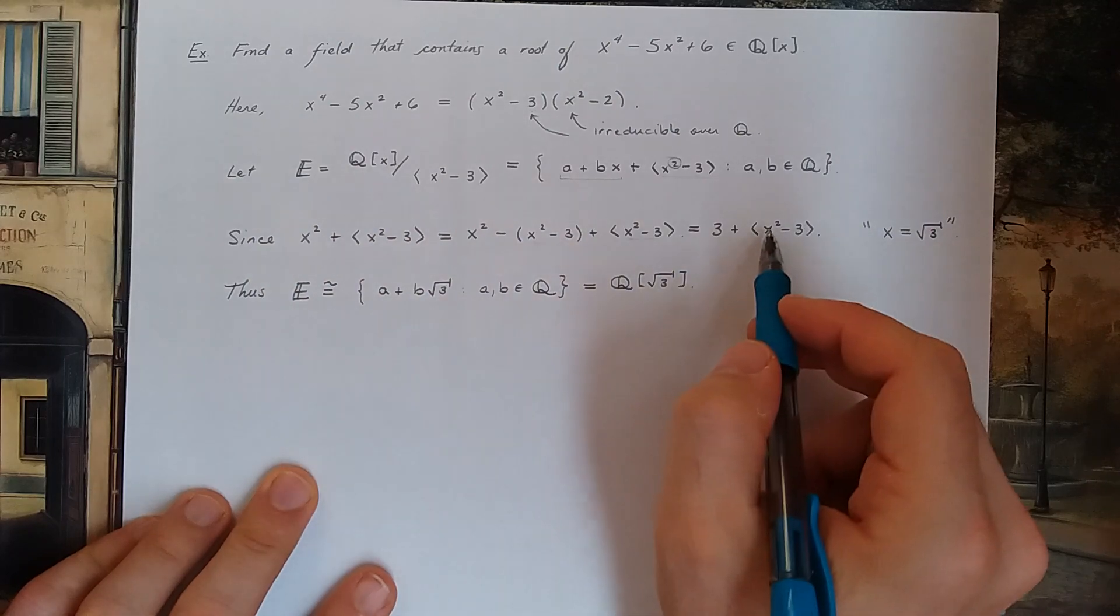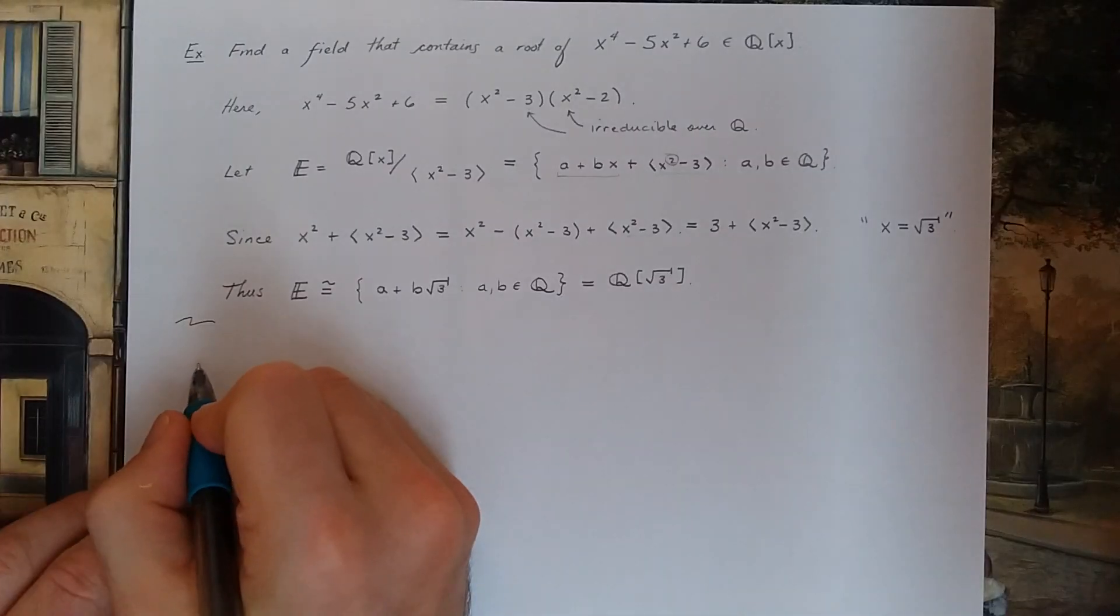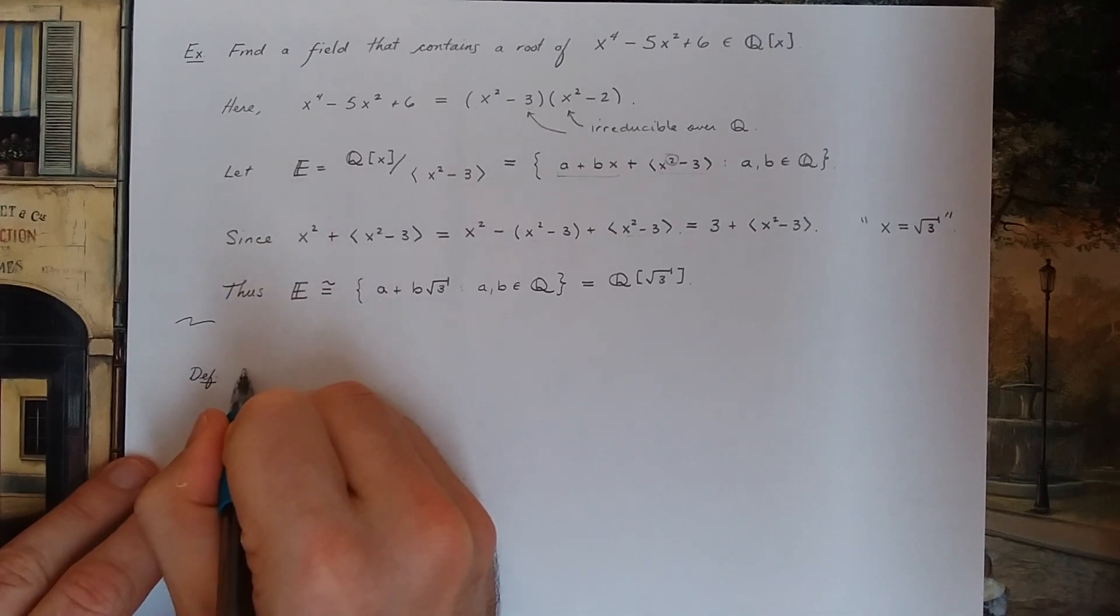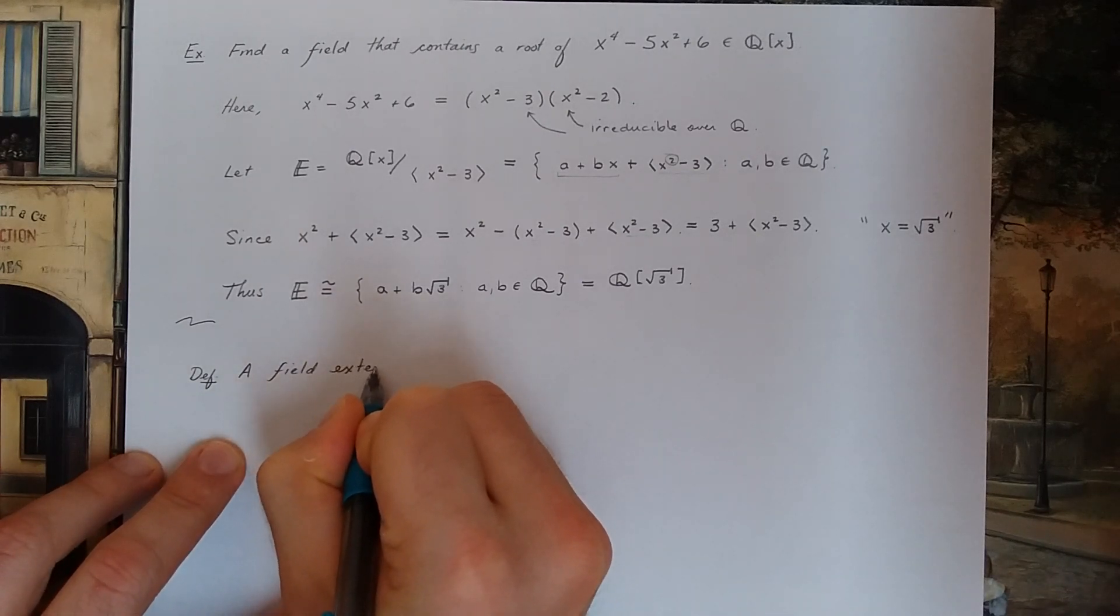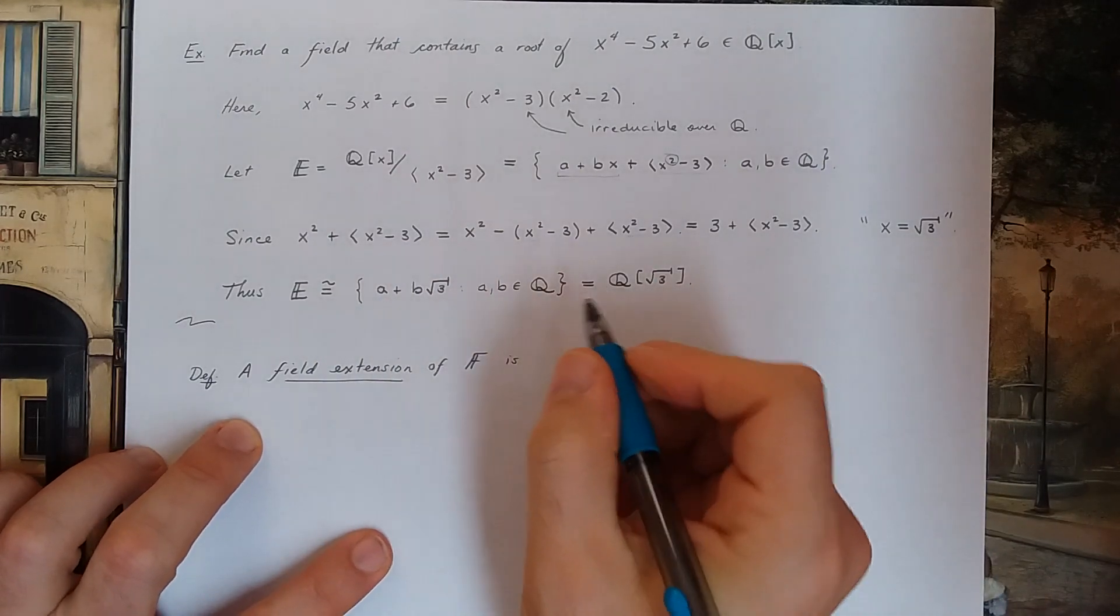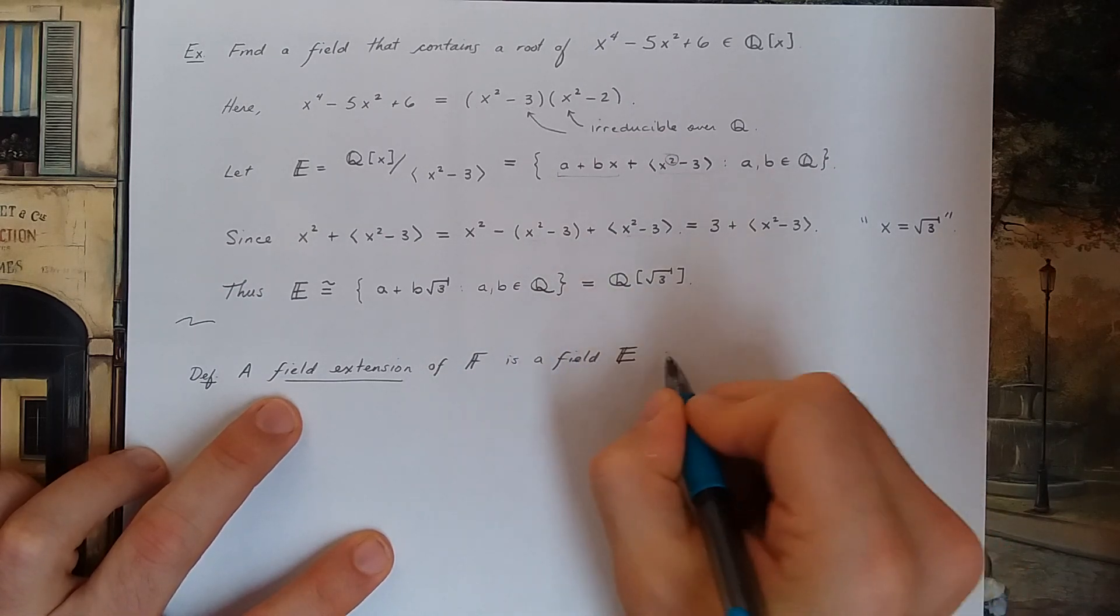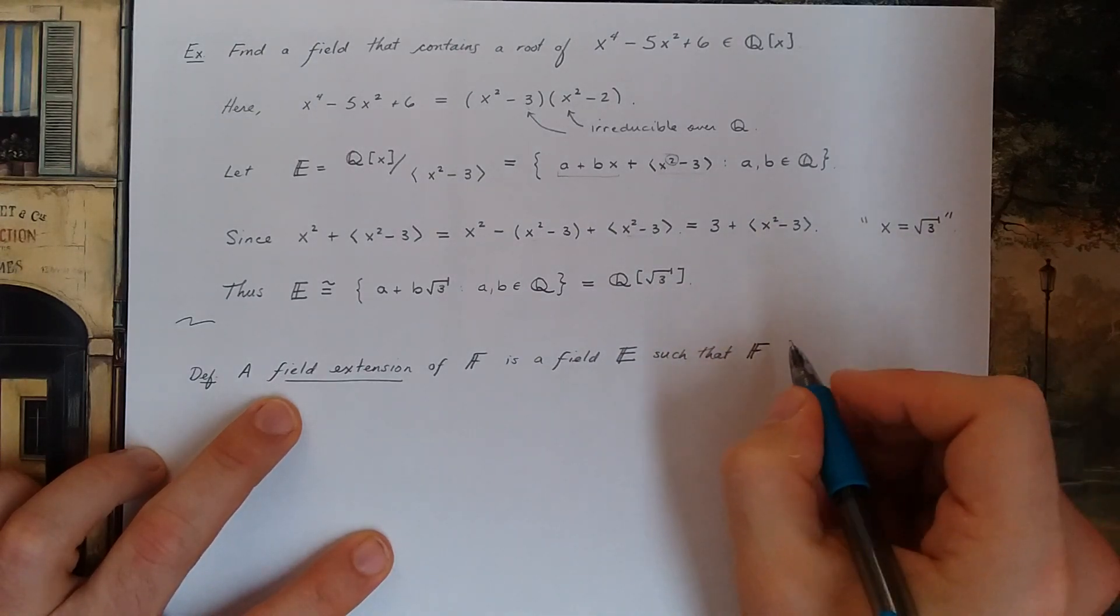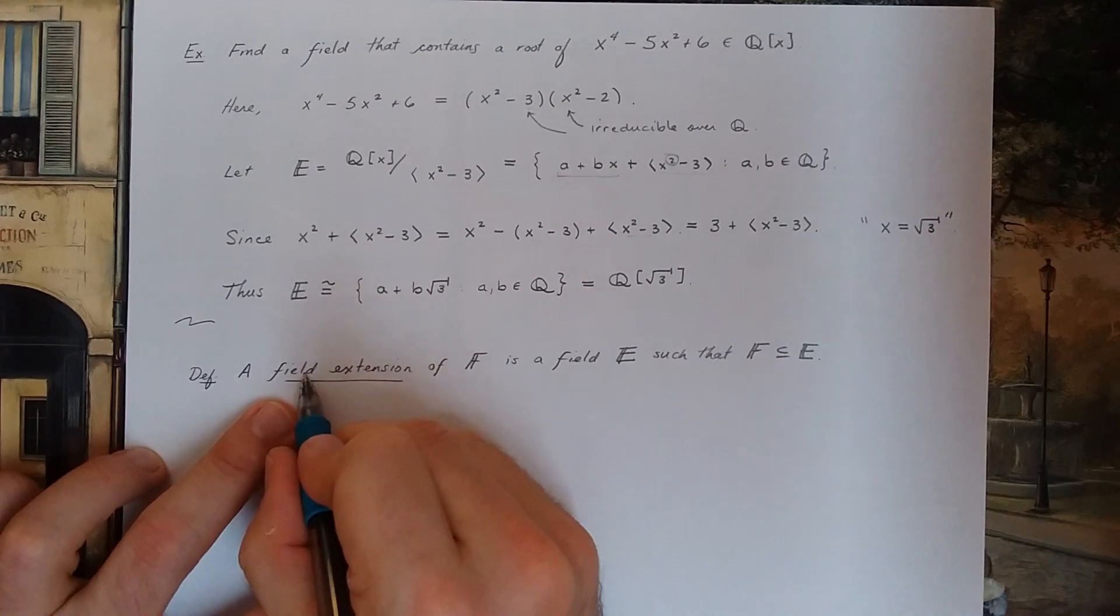So there's a second example of the fundamental theorem of field theory that we've seen so far. I'm going to end this video with a quick and easy definition. Here's a definition. A field extension of a field F is simply a field E such that F is contained in E. So that's the definition of a field extension.